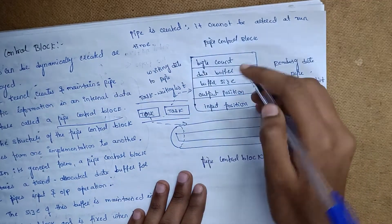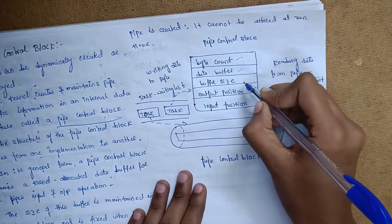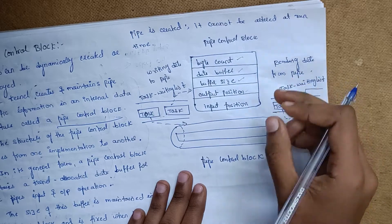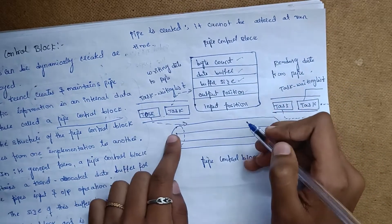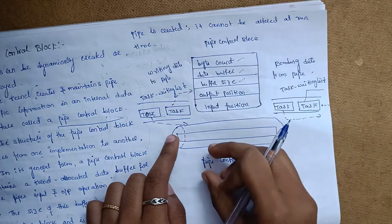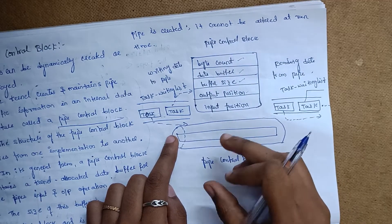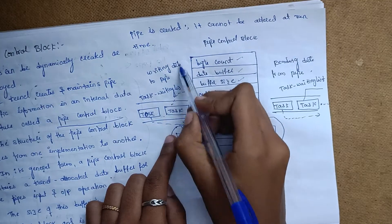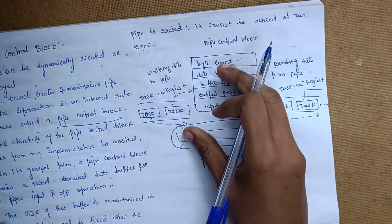The internal structure contains: byte count, data buffer, buffer size, output position, and input position. We choose byte count, data buffer, and buffer size. These fields handle writing data to a pipe and reading data from a pipe within the internal structure.